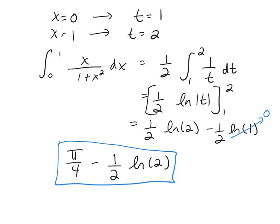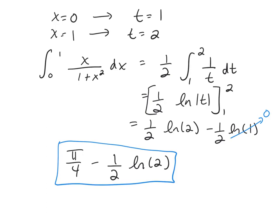Combining everything: the final answer is π/4 minus (1/2) ln(2). Since this is a definite integral, there should be no variables remaining — only numbers.